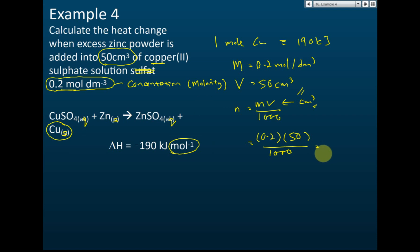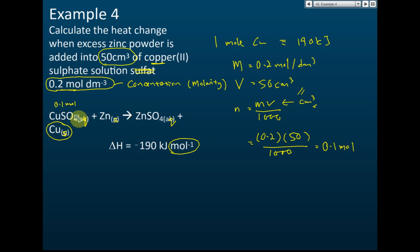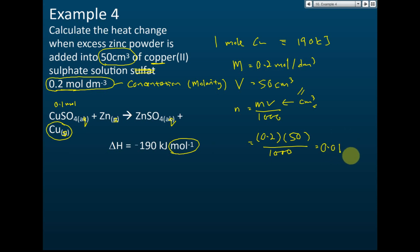Using the formula n = MV / 1000: n = 0.2 × 50 / 1000 = 0.01 moles. This is 0.01 moles of copper sulfate. From the equation, one mole of copper sulfate produces one mole of copper, so 0.01 moles of copper sulfate produces 0.01 moles of copper displaced.